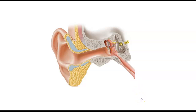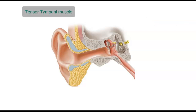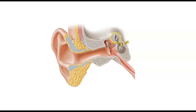Attached to the auditory ossicles are two tiny muscles, the stapedius muscle and the tensor tympani muscles. These muscles contract to protect the inner ear by reducing the intensity of sound transmission from external sounds and vocal transmission. So imagine you're going to a rock concert — these muscles give and take a little bit to prevent you from blowing your eardrum.